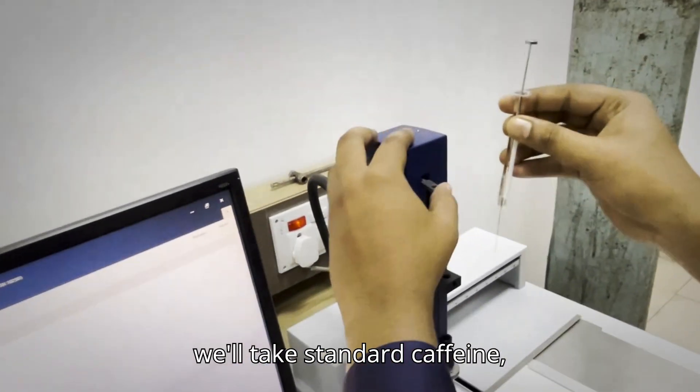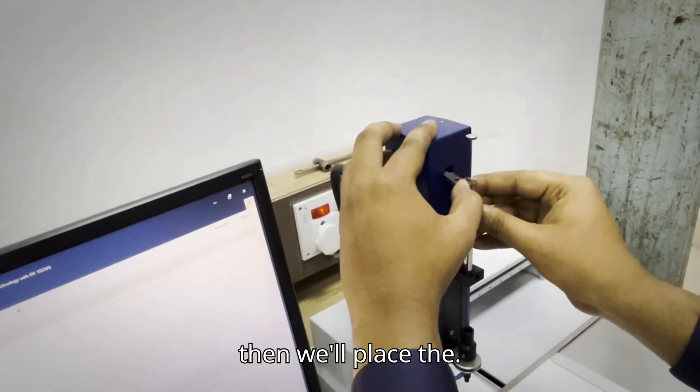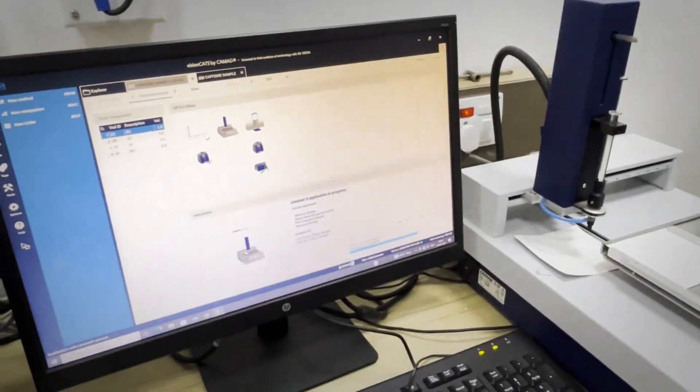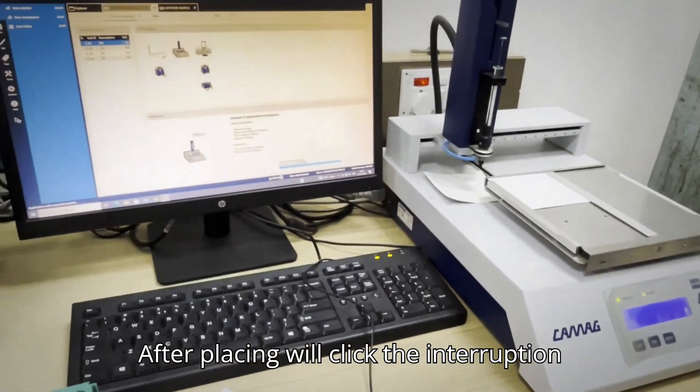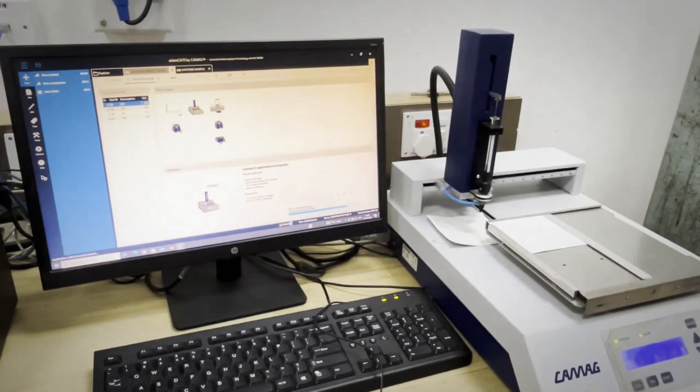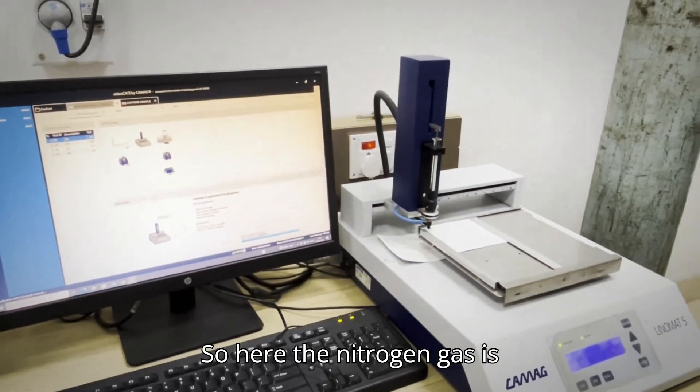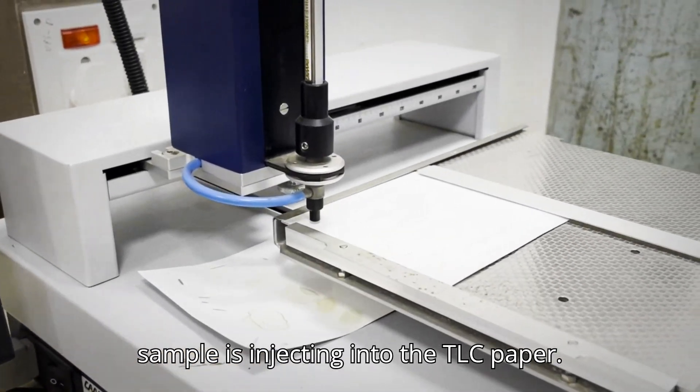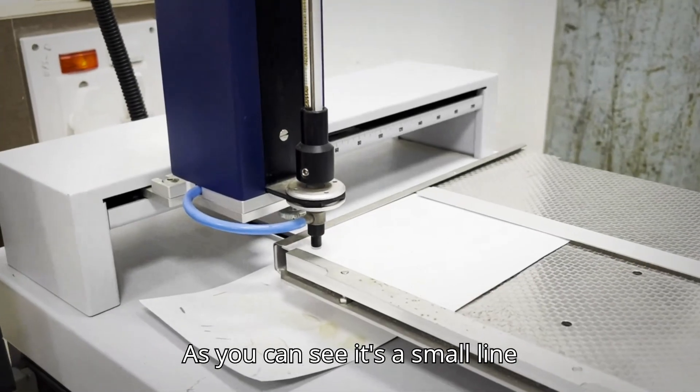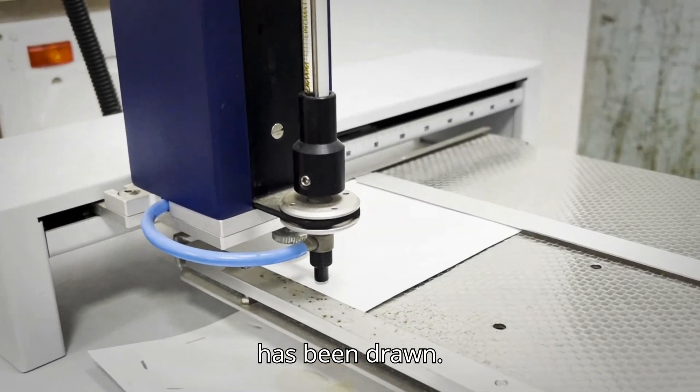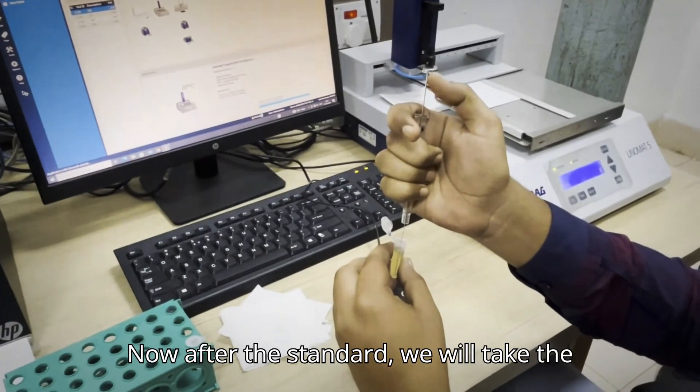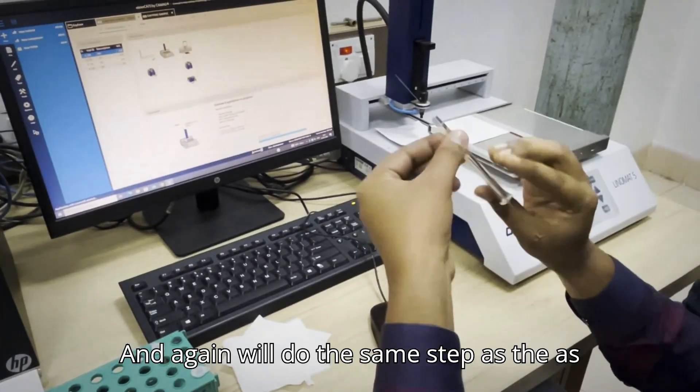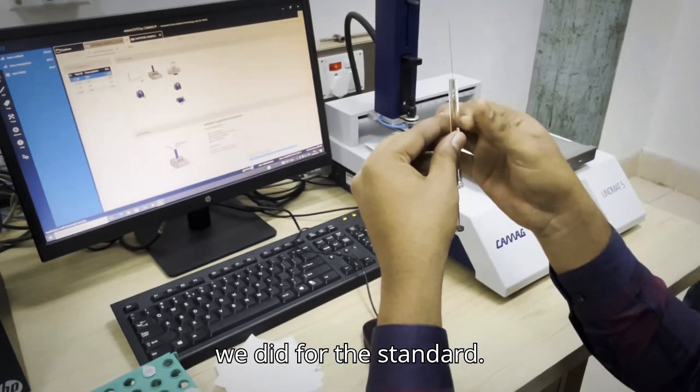Now we will take standard caffeine. Then we will place the syringe in the syringe holder. After placing we will click the enter option over here. Here the nitrogen gas is used to inject the sample. Here the sample is injecting into the TLC paper. As you can see, a small line has been drawn. Now after the standard, we will take the sample. And again, we will do the same step as we did for the standard.